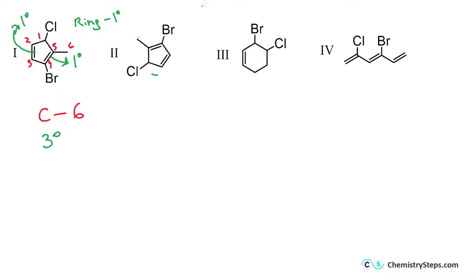The second structure also has six carbons — five in the ring plus one outside — and three degrees of unsaturation, making it a good candidate. To confirm it's not just drawn differently, we number from the carbon connected to Cl: one, two, three, four, five, going toward the double bonds. We get a double bond between C2 and C3, and between C4 and C5, which matches the first structure exactly. These two are equivalent — they are the same compound, not constitutional isomers.